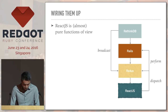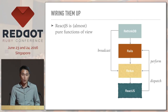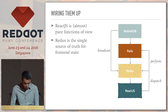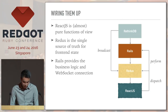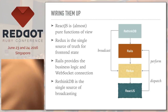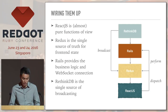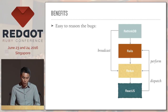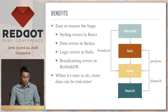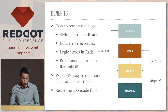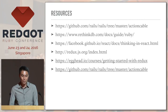Wiring all of them together: React.js acts almost like a pure function of the view; Redux is the single source of truth containing and managing all the state; Rails handles the business logic and the WebSocket connection; and Breeding DB is the single source of broadcasting. With all this, we can reason about bugs very easily — styling errors, data errors, logic errors, broadcasting errors — we know exactly where to find them. This makes real-time app development much easier, and when it's easier, it's more fun. Here are some resources for you all — thank you very much.